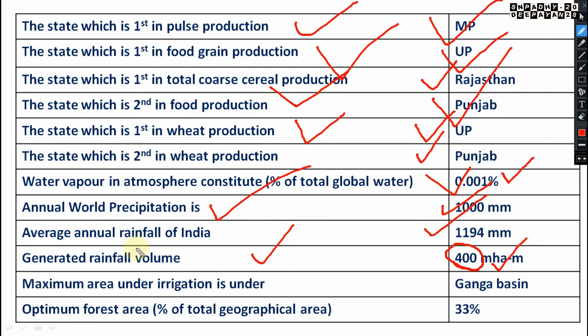The generated rainfall volume is 400 million hectares. The maximum area under irrigation is under the Ganga basin. The optimum forest area out of total geographical area should be 33 percent.